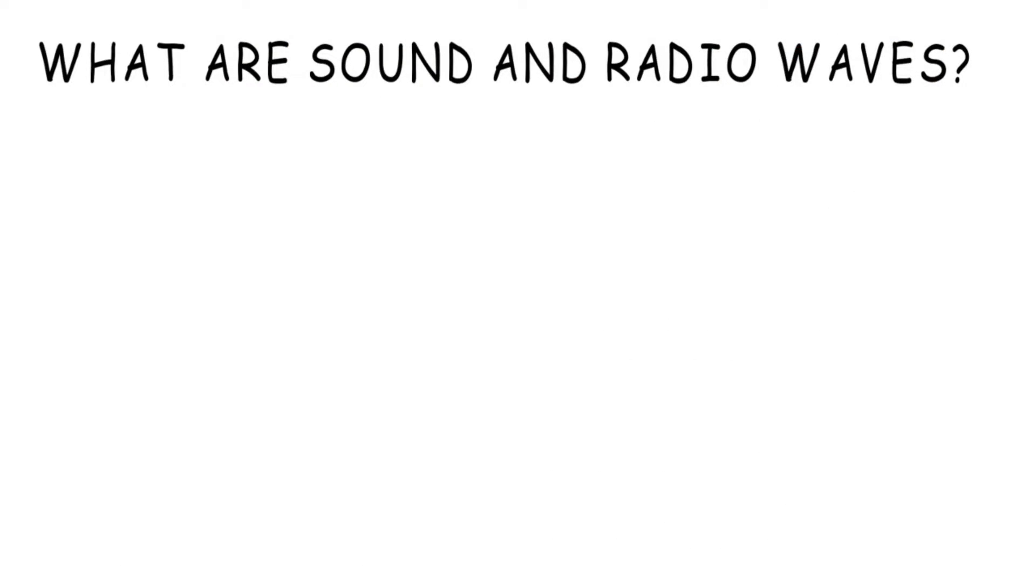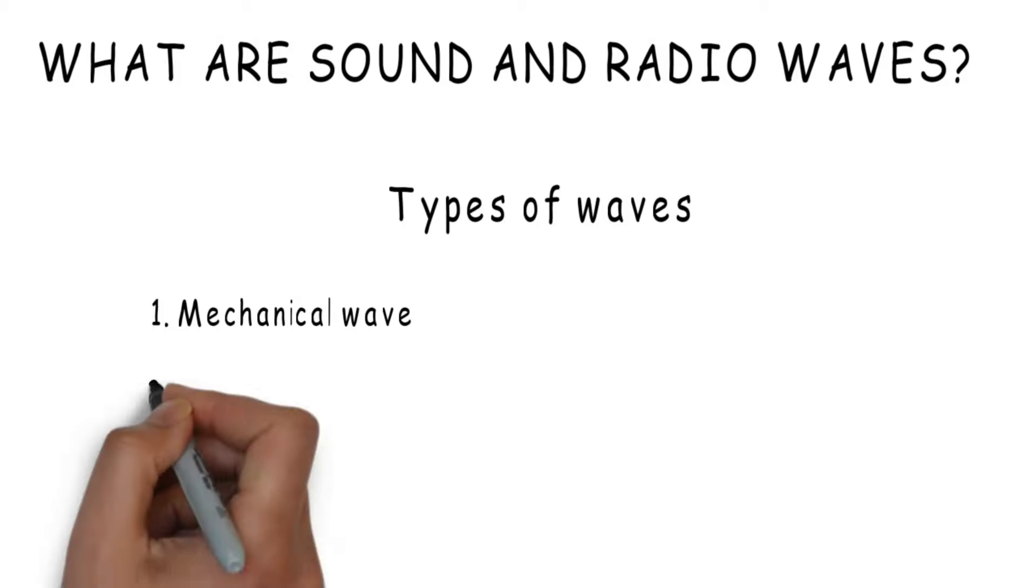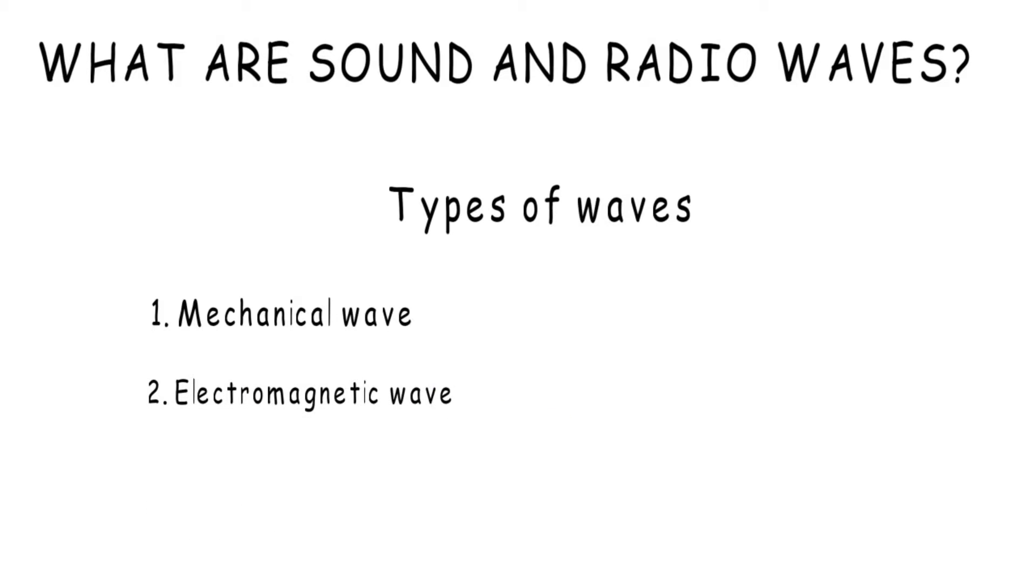To understand what sound and radio waves exactly are, we first have to know about the types of waves. Basically, there are two types of waves. First is mechanical waves, which cannot travel without a medium, and the second is electromagnetic waves, which can travel without a medium.